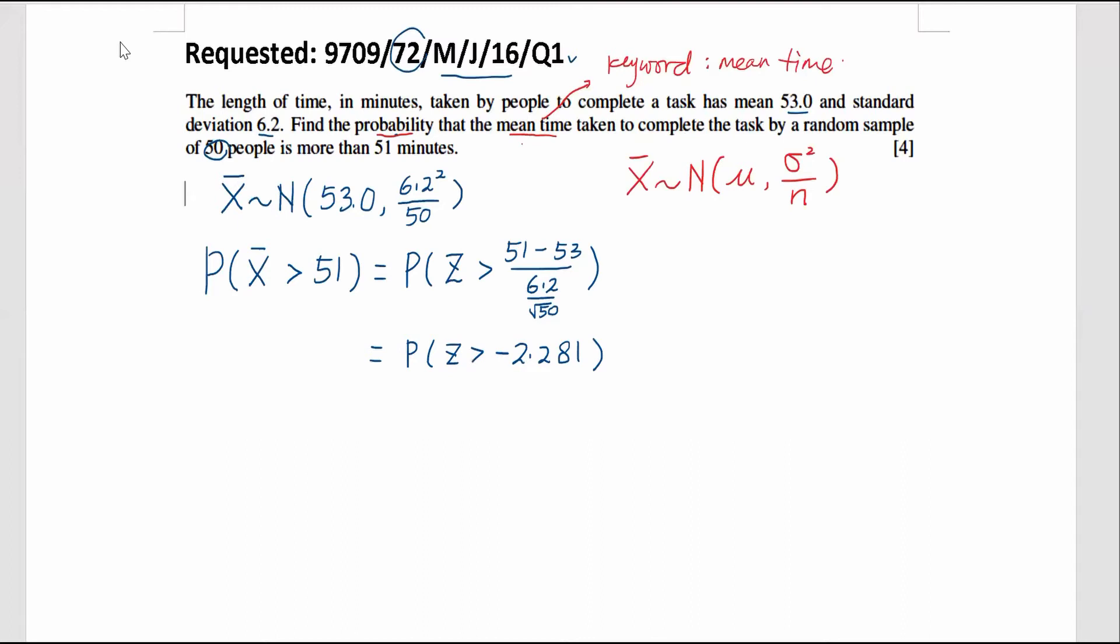All right. So now I sketch the bell-shaped curve. The standardized bell-shaped curve where zero is in the middle and negative 2.281 should be on the left-hand side. Since the question is looking for the Z-score greater than, that means I'm going to find out the area towards the right.